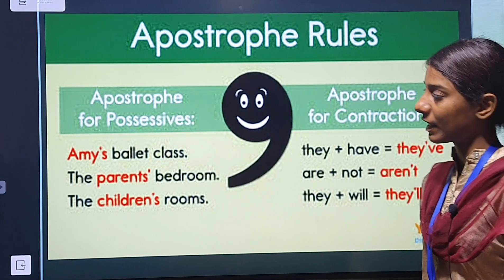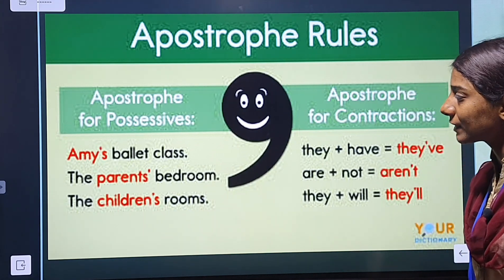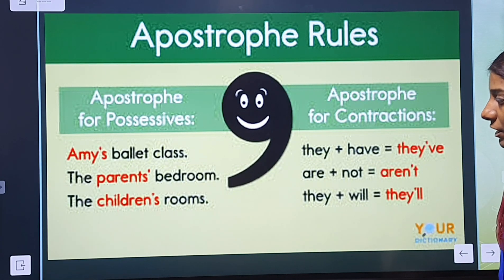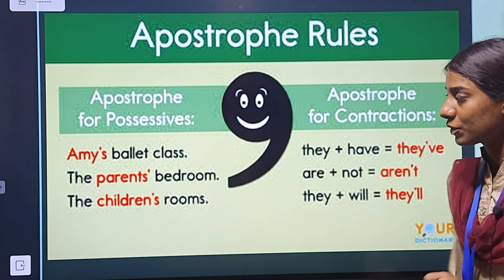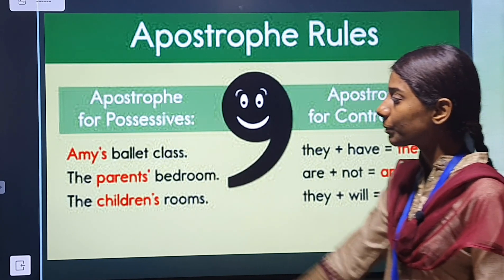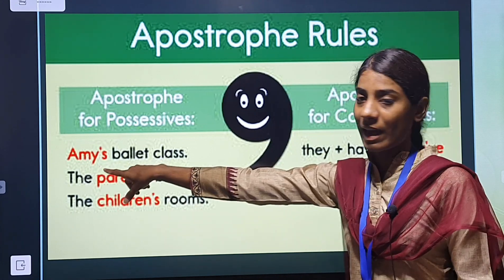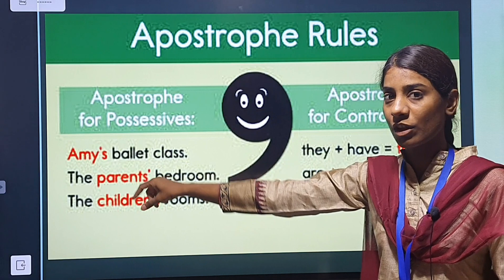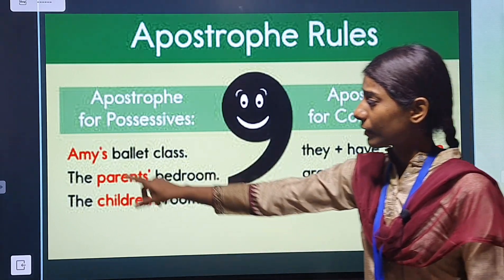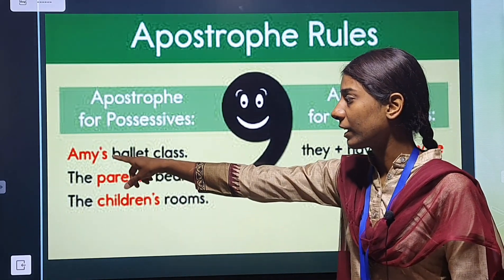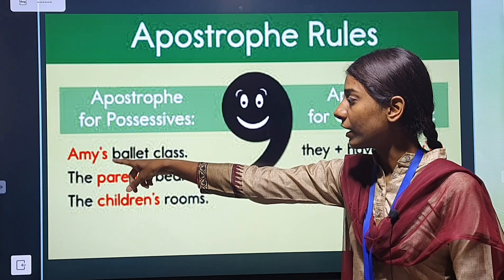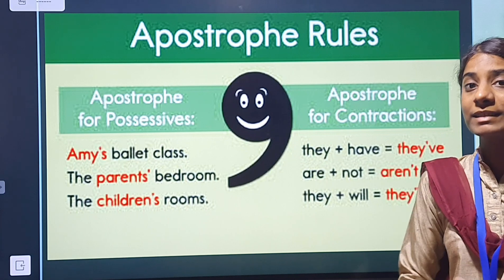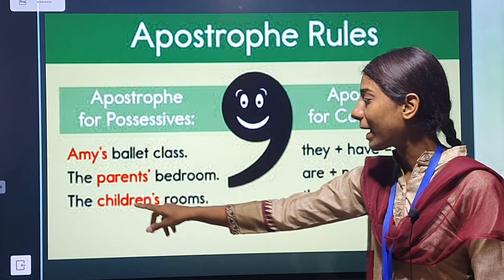Here is an example: Ami's ballet class. Now Ami is a proper noun and also singular, so after the name Ami there is an apostrophe and then an S — Ami's ballet class. Whose ballet class? Ami's ballet class.